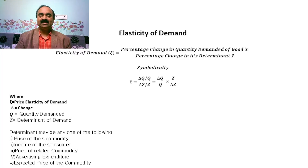Elasticity of demand means the responsiveness of demand to the changes in its determinants or factors of demand. Elasticity of demand can be defined as the ratio between the percentage change in quantity demanded of good X and percentage change in its determinant Z.